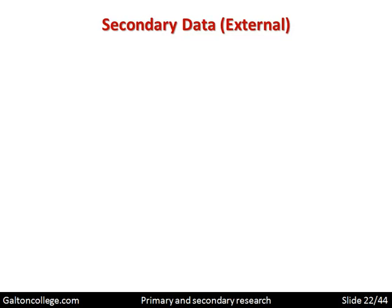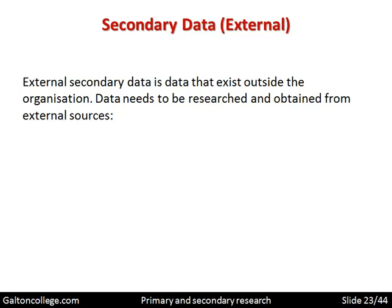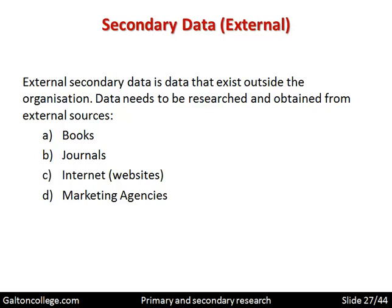There are external sources of secondary data — outside of the organisation. Data needs to be researched and obtained from external sources. For example, there's data in books, or in journals which would have to be researched and taken out and analysed. It could be the internet or websites. Marketing agencies sometimes produce reports that can be used for decision-making — the marketing agencies didn't produce it for the company, but the company can use that data to help make better decisions. It's secondary.